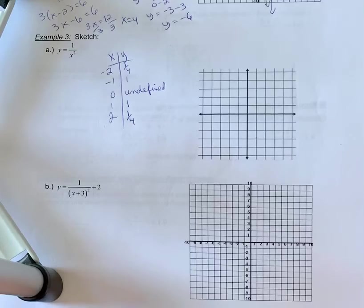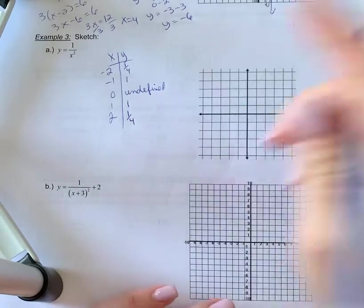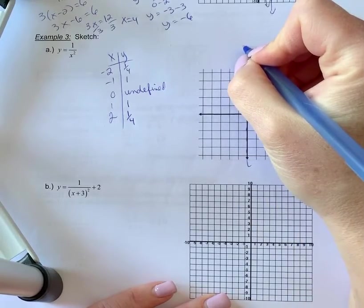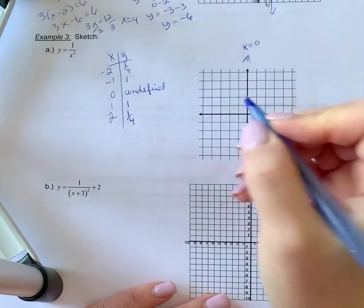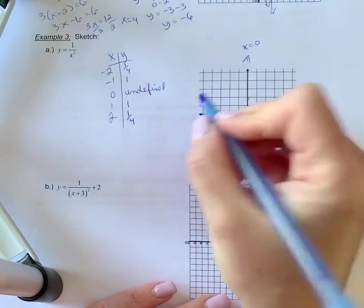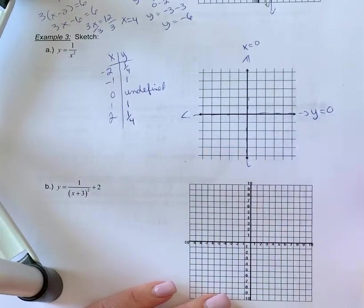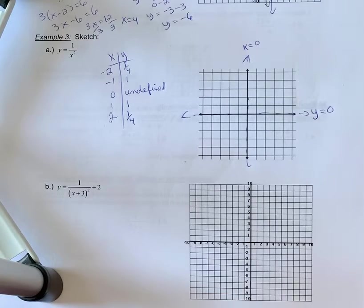So undefined would be where our vertical asymptote is. And we know we're going to have, because we have a reciprocal of 1 over, we are going to have our horizontal asymptote here. And again we'll learn more rules about that down the road too.